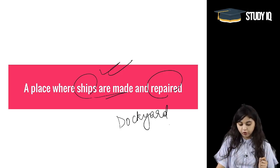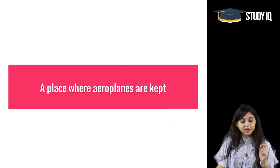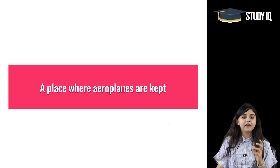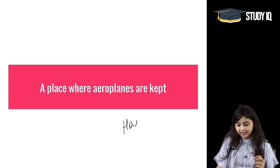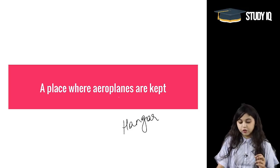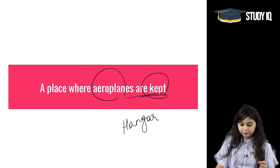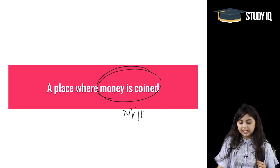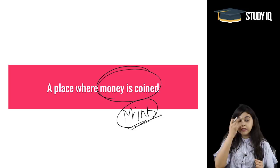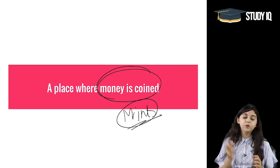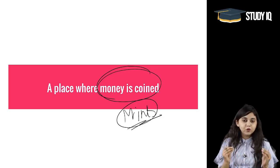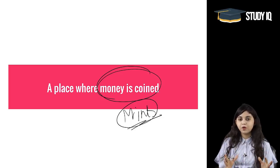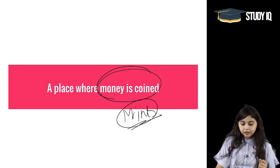A place where aeroplanes are kept and repaired is called a 'hangar' — this is important to remember. A place where money is coined is called a 'mint.' So those are the one-word substitutions we have covered today.